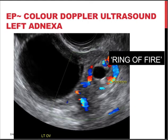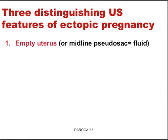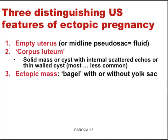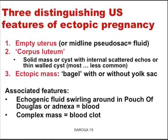To summarize the distinguishing features on ultrasound of an ectopic pregnancy: one, the classic empty uterus; two, a corpus luteum — and on the same side an ectopic mass, typically the bagel sign, with or without a yolk sac; and very rarely an embryo within this structure, making the diagnosis 99.999% certain before treatment. Associated features include fluid swirling in the pouch of Douglas suggesting blood or blood clot, and sometimes a complex mass around the adnexa representing a blood clot.